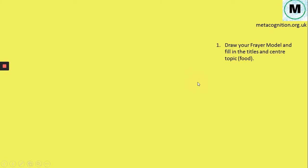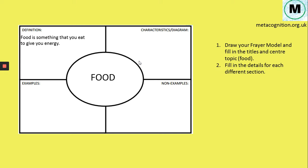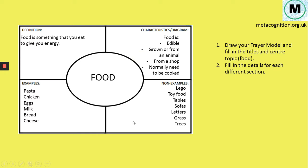To produce one: first, draw your Frayer Model and fill it in with the titles and the centre topic. I'm going with 'food.' You might be given a template — I've just written food in the centre. Then go around and fill in the different sections. I've put in a definition, some characteristics, some examples, and some non-examples — things people might eat that really aren't food. A lot of kids eat Lego; toy food can be quite convincing; tables and sofas — toddlers do this; dogs eat letters; and dogs, animals, and toddlers eat grass and trees too.